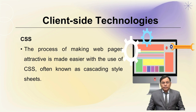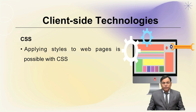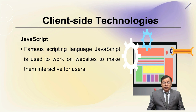Next is CSS, often known as Cascading Style Sheets. The process of making web pages attractive and easier is done with CSS. Applying styles to web pages is possible with CSS without relying on the HTML that creates each web page. Next is JavaScript, a famous scripting language used to make websites interactive for users and to create interesting web-based games and applications.